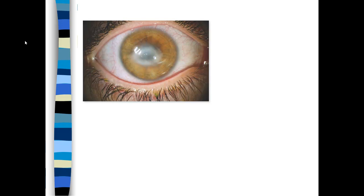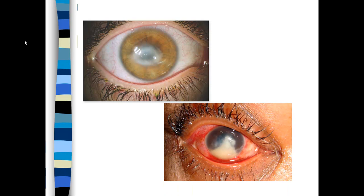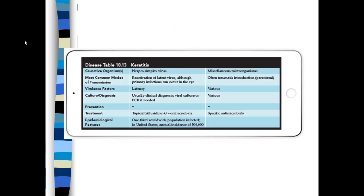Images show a cloudy appearance and impaired vision. The top image is herpes simplex and the bottom is Acanthamoeba. Both herpes simplex and bacterial or protozoan Acanthamoeba cases are shown. In terms of virulence factors, herpes simplex can lie latent in nervous tissue. Diagnosis can be confirmed by viral culture or PCR, similar to what's being done with COVID-19. You can't prevent herpes keratitis, so if it happens you need to treat with topical and oral antivirals.